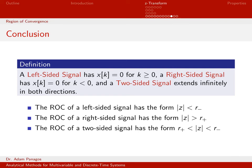Now we can summarize what we've proven and define our terms. A left-sided signal is a discrete time signal that's zero for all positive time including K equals 0. A right-sided signal is zero for all K less than 0. A two-sided signal extends infinitely in both directions.